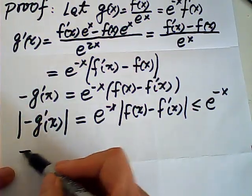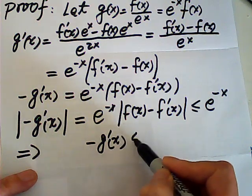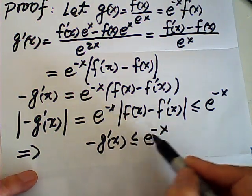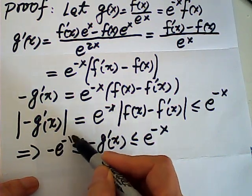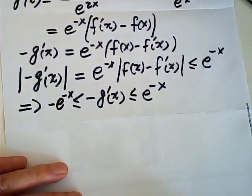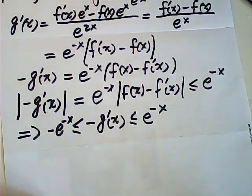So this means that negative g prime of x is between e to the negative x and negative e to the negative x, just simply according to the inequality.